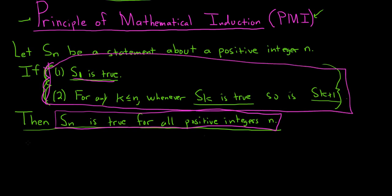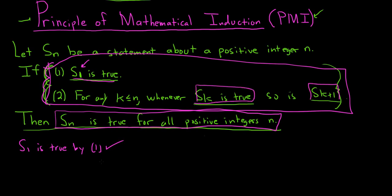First of all, we know it's true for 1. When n equals 1, it's true because S sub 1 is true — that's by our first condition. So now we need to figure out why is it true when we plug in 2. Well, according to the second condition, whenever S sub k is true, so is S sub k plus 1.